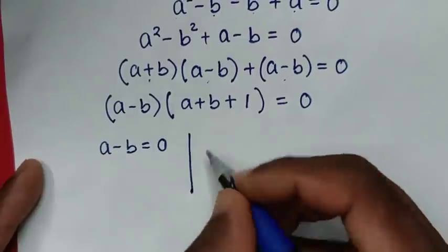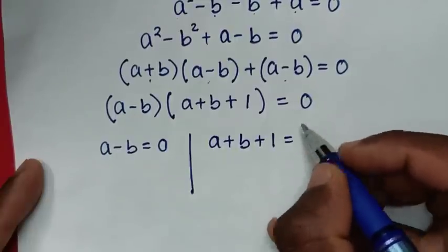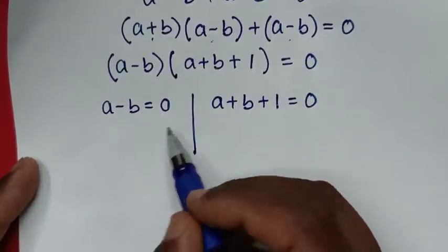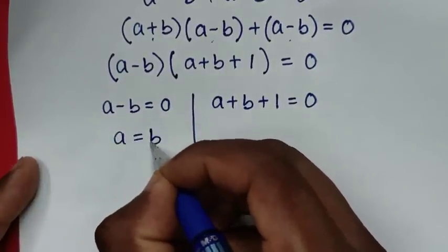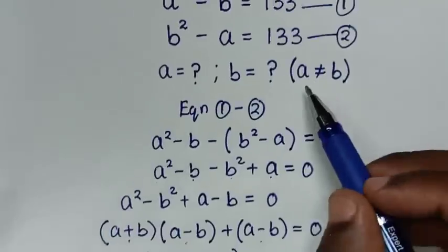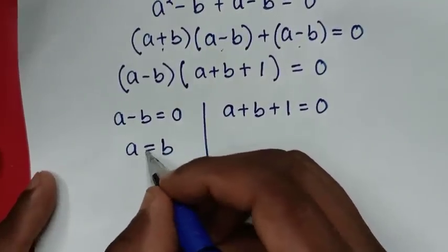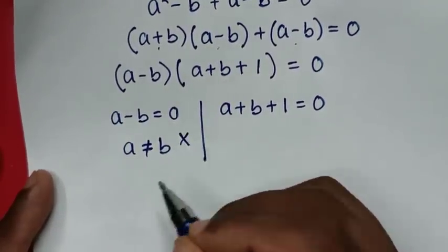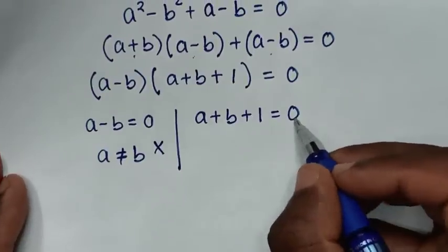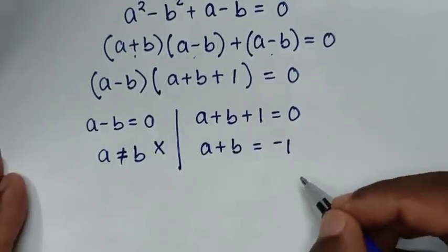This gives two solutions: a minus b equals 0 (meaning a equals b) and a plus b plus 1 equals 0. The first solution a equals b is rejected because the problem states a is not equal to b. We are left with the second solution: a plus b equals negative 1. We call this equation 3.